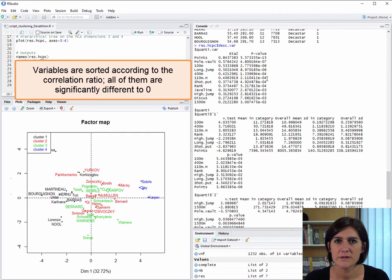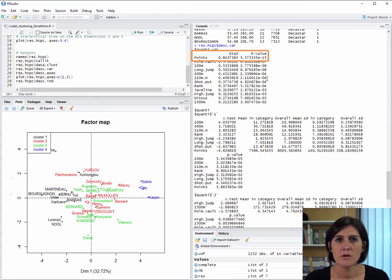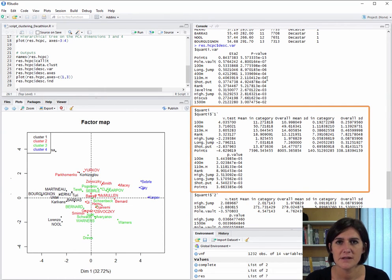To find out whether a link is strong or not, we calculate the correlation ratio and look to see if it's significantly different to zero. That is, the correlation ratio between the quantitative variable and the class variable. For example, we see here that the number of points variable is the one that's the most linked to the class variable. Next up, we have a kind of summary for each class. For example, for the first class, the most linked variables are the 100 meters, the 400 meters, the number of points, and the shot put.